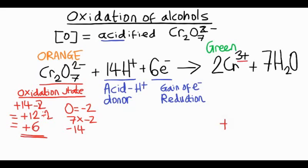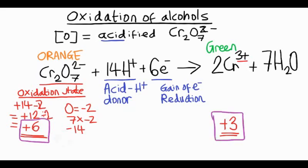So chromium in the dichromate ion is a +6 oxidation state, and it goes to chromium +3. So it's a reduction reaction. It has to gain electrons to make that change, which means it's reduction.